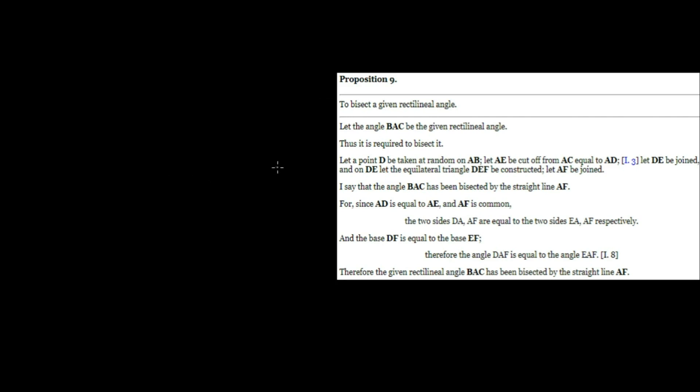To bisect a given rectilineal angle, let the angle BAC be the given rectilineal angle. So let's draw that in. So let's say this is our angle here. Call this BAC. So that's a given angle.